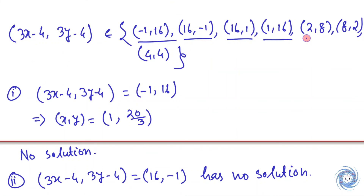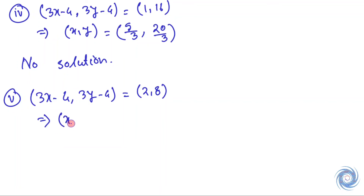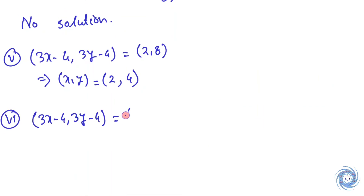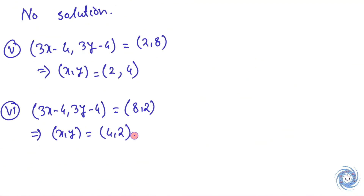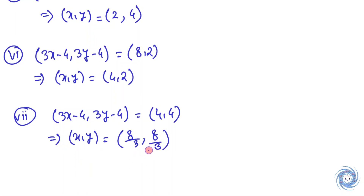Taking the next case, we get a solution. Considering 8 and 2, from here we have x, y equals 4 and 2, so here we have a solution. Now taking the last case, 4 and 4: since 8 over 3 is not an integer, there is no solution here.